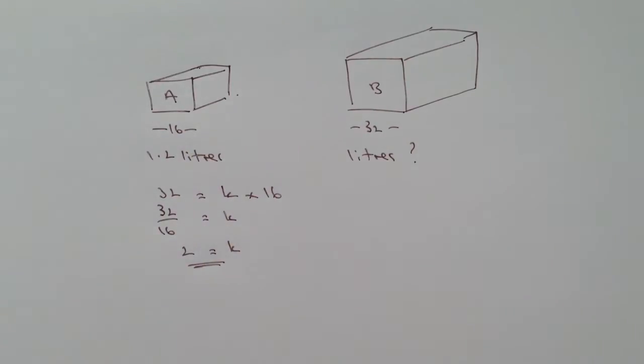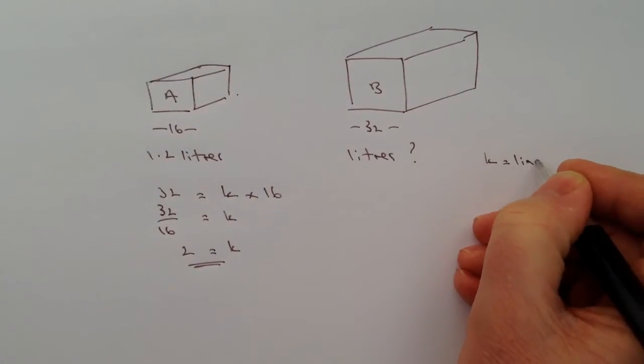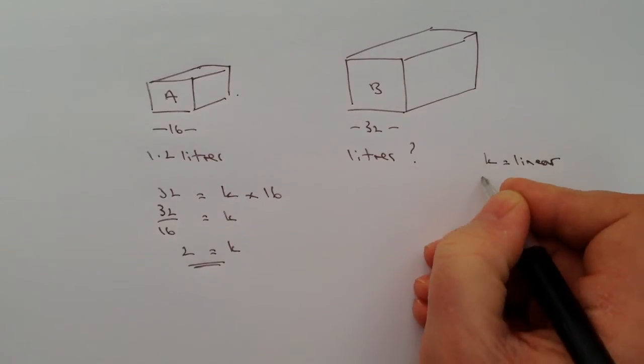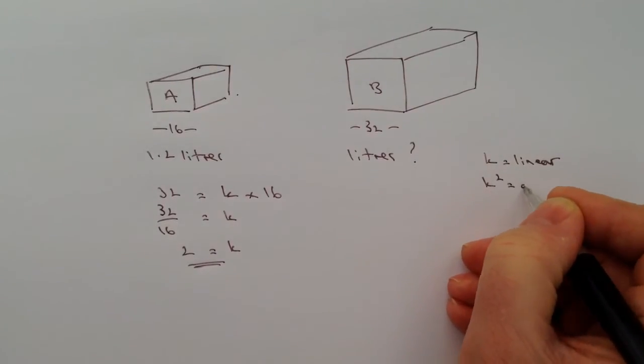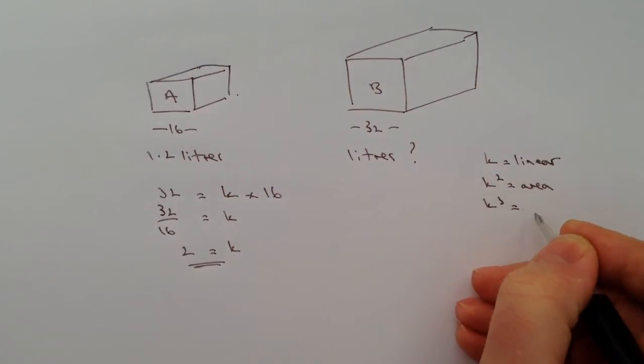OK, now when you're looking at mathematically similar shapes you have to remember that K on its own is the linear relationship. If it's an area relationship it's K squared. And if it's a volume relationship it's K cubed.